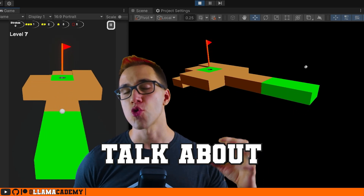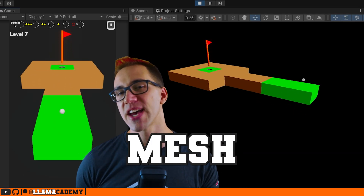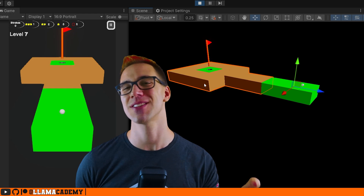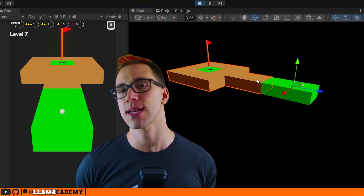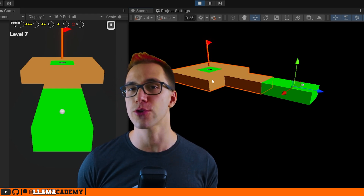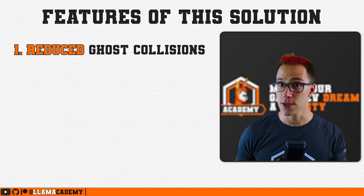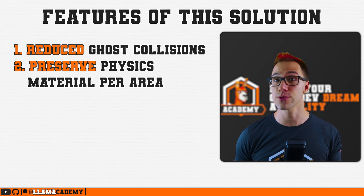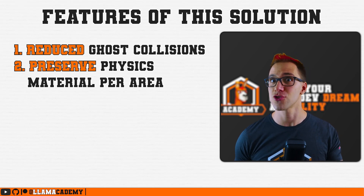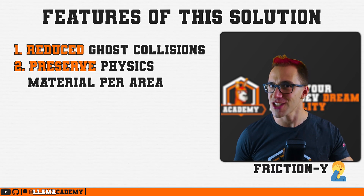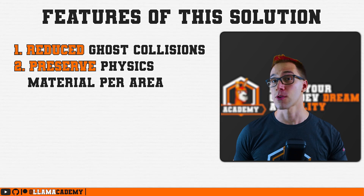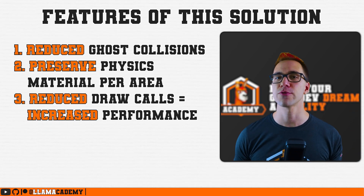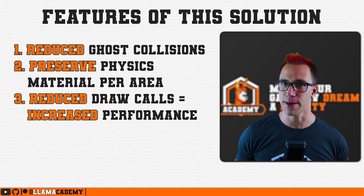In this video, we're going to talk about runtime mesh combination. We're going to see how I use that in my mini golf micro game to reduce ghost collisions, preserve the physics material on the different types of tiles — so sand should be more frictiony than grass — and also reduce the number of draw calls, improving the performance of the game.